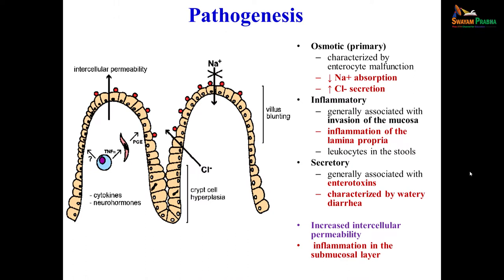As for pathogenesis, there are three main mechanisms for causing diarrhea. First, osmotic: characterized by enterocyte inflammation and malfunction, with decreased sodium absorption and increased chloride secretion. Second, inflammatory: associated with invasion of the mucosa and inflammation of the lamina propria, with pus cells or leukocytes seen in stools. Third, secretory: associated with production of enterotoxins, characterized by watery diarrhea with increased intracellular motility and submucosal inflammation.